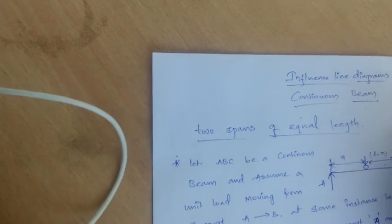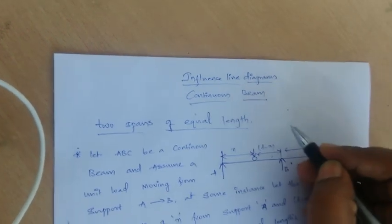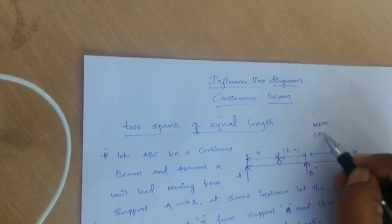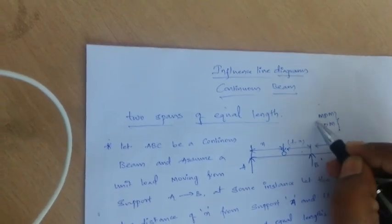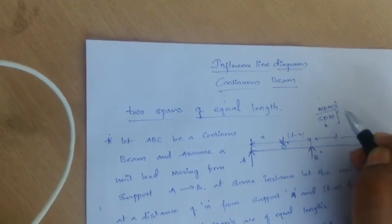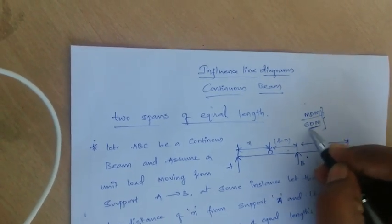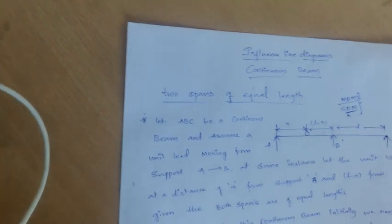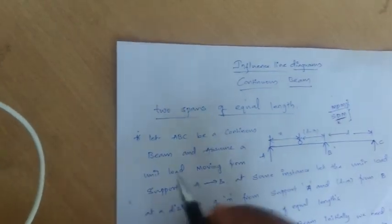To solve any continuous beams, in earlier classes we learned how to solve them using the moment distribution method, slope deflection method, and Kani's method. Here we use the moment distribution method to solve influence line diagrams of continuous beams. We will first derive the empirical equations and then work through an example problem.